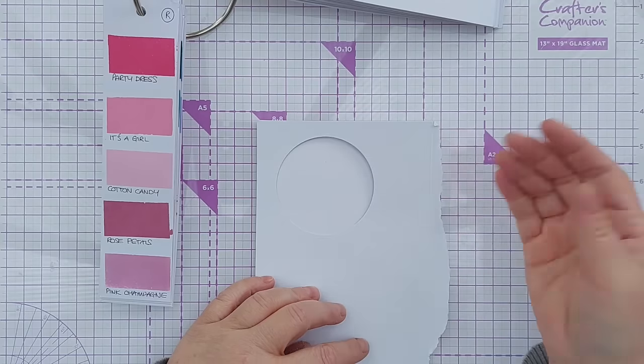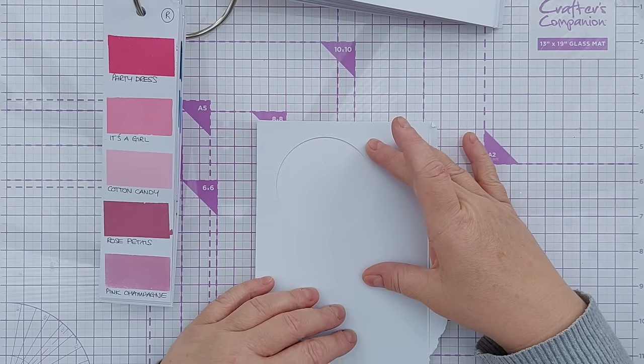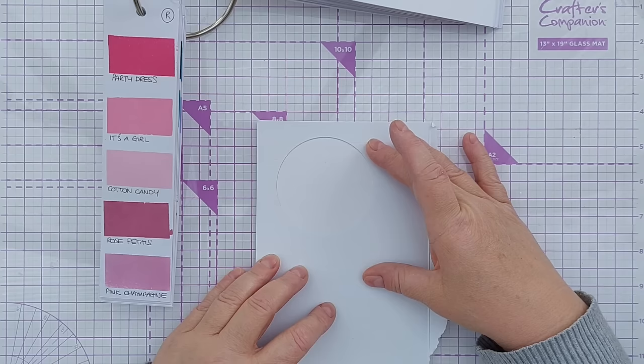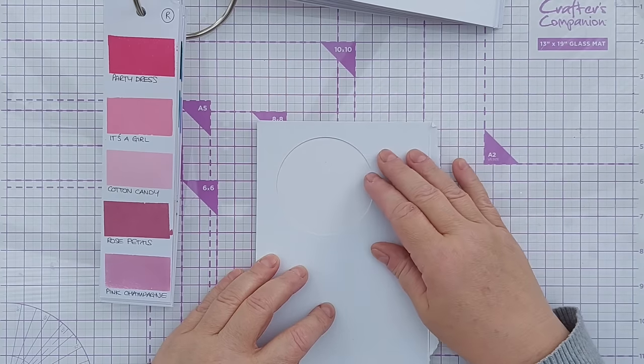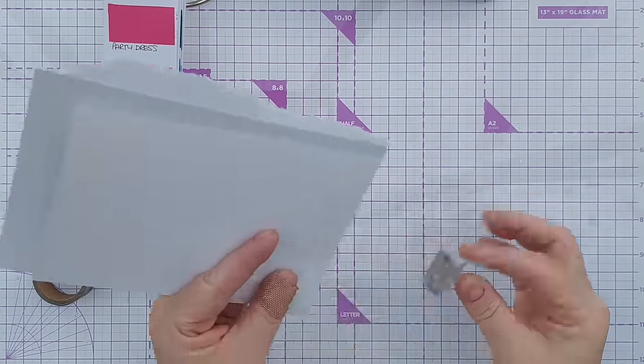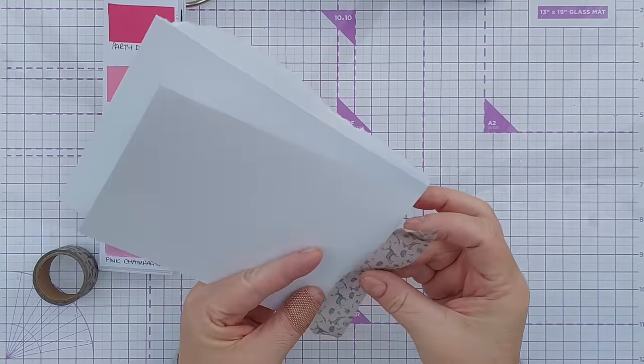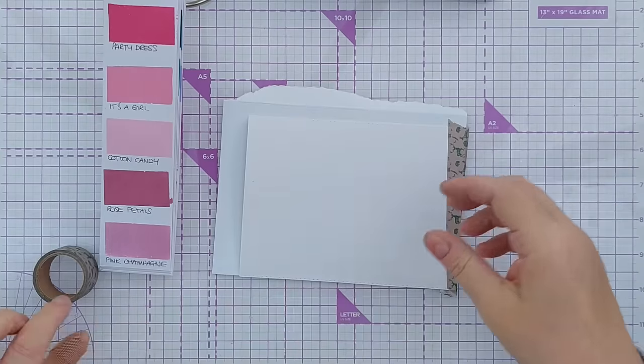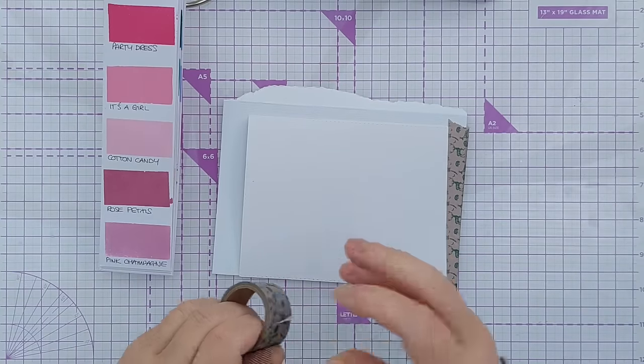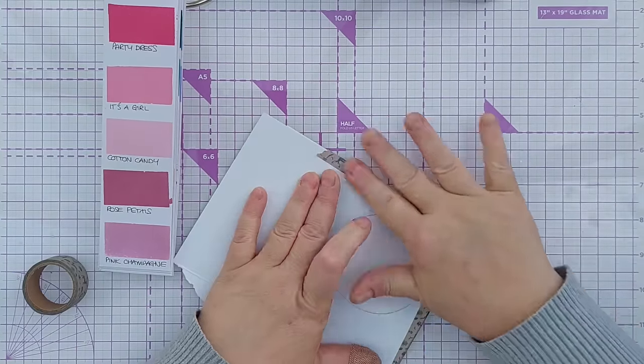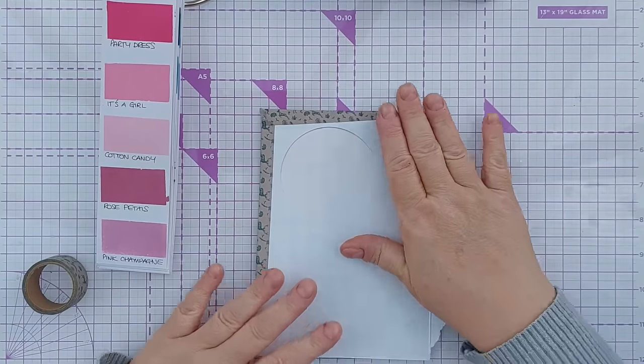So you can use a ready-made stencil if you've got one or you can cut a stencil out of a bit of packaging. I've just got this bit of scrap paper here and I'm going to attach my DIY stencil to my panel of mixed media paper using some washi tape and that will just stop my mask shifting around.